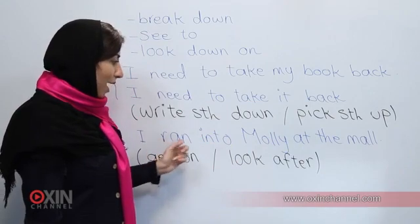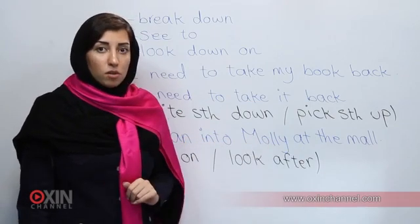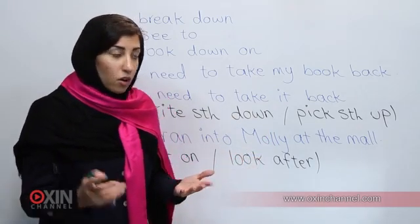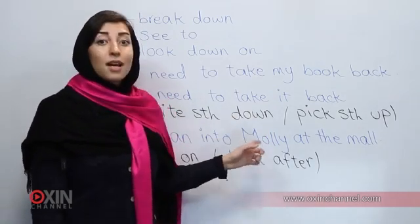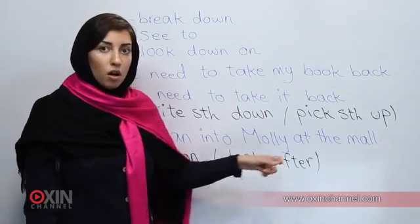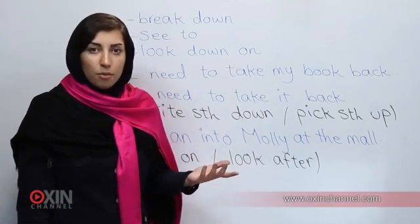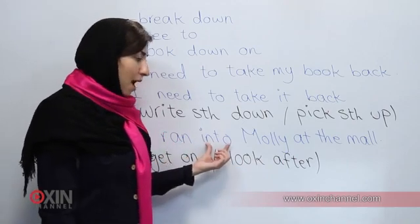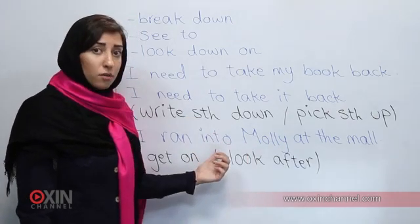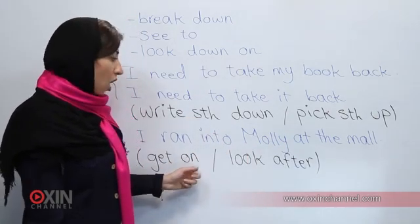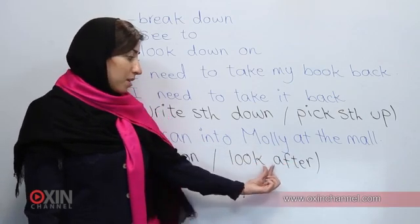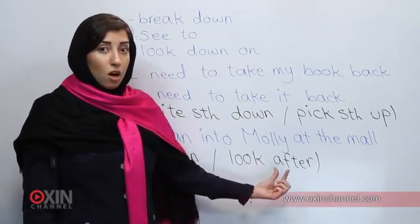Now look at this one: 'I ran into Molly at the mall.' I was at the mall and I suddenly saw Molly — I ran into her. 'Run into someone' is an inseparable verb. We can never say 'I ran Molly into at the mall' — it's inseparable. You need to keep the verb and the particle next to each other, with the object after the particle. Other examples include 'get on' and 'look after' — we never put something between the verb and the particle.